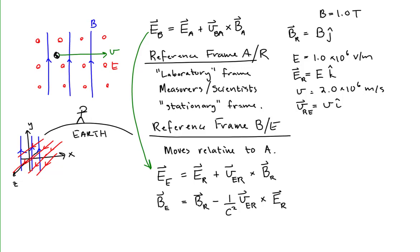Two observers can disagree as to the cause of, say, a force on an object, but they won't disagree as to the magnitude and direction of the force — just the cause. What one observer would say is caused by an electric field, another observer moving relative to the first would say is caused by a magnetic field, or a combination of the two.